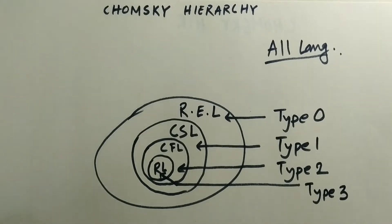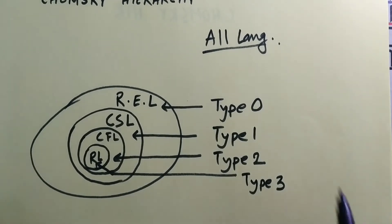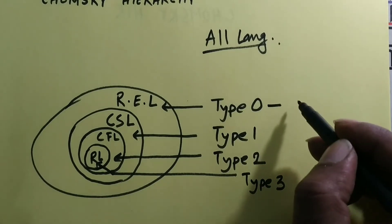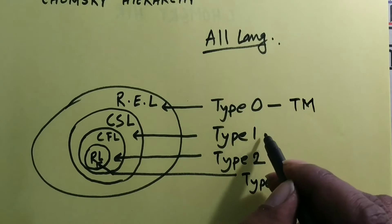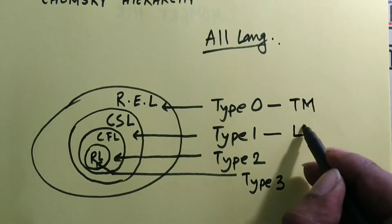And how they are going to be recognized? Type 0 languages are recognized by Turing machine. Type 1 languages are recognized by LBA.